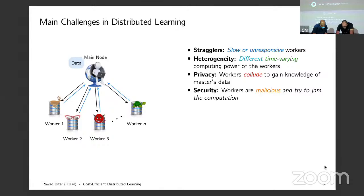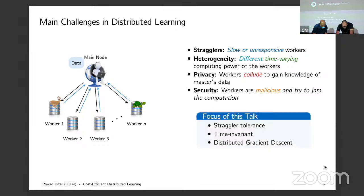For this particular talk, I'm not going to solve all of them. I'll focus on two: that of stragglers, and I'll look at a time-invariant system where the workers are heterogeneous — some are faster than others — and I'd like to distribute computations more often to the fastest workers. The main computation I'm after is distributed gradient descent.